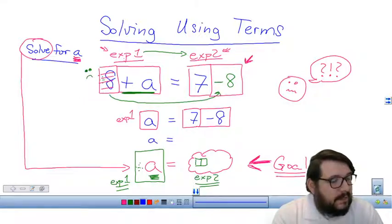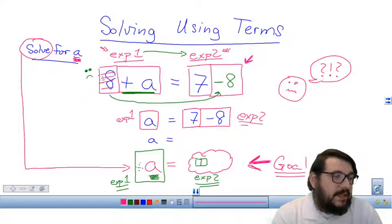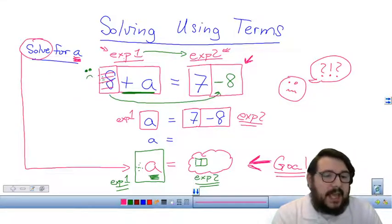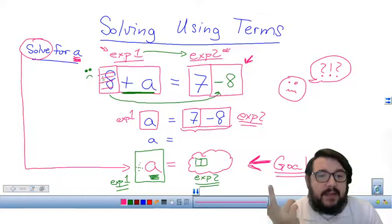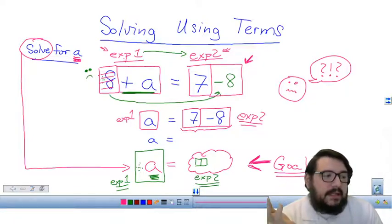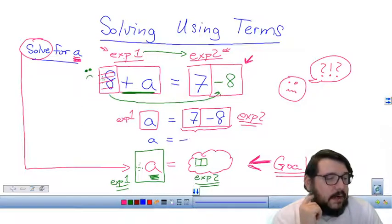But expression number two can be simplified, because there's some basic arithmetic that we can do here. Seven minus eight. Well, we can combine those terms. And we talked about that in another video where we talked about how to add and subtract in algebra. But honestly, you don't really even need to know about that. You just need to know that, well, seven minus eight is negative one.